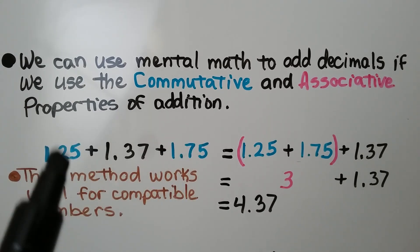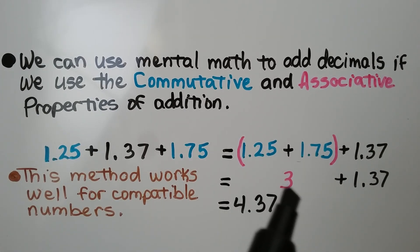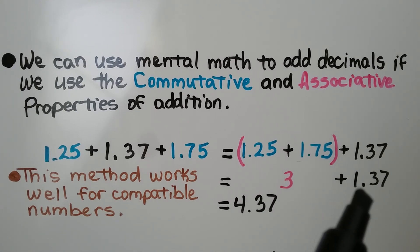If we group them together and change the order and add within the parentheses first, we get 3 whole. Then it's very easy to add 1.37. It's equal to 4.37.